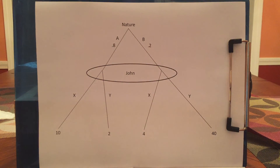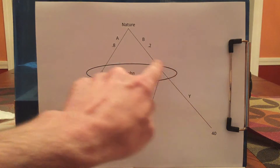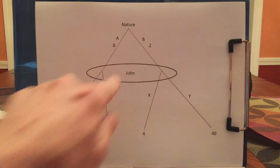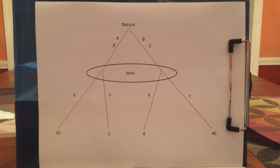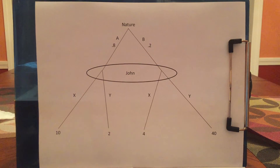Then in this game, John moves, but because of this uncertainty, when John moves he doesn't know if nature picked A or B. Why don't you figure out what John should do?